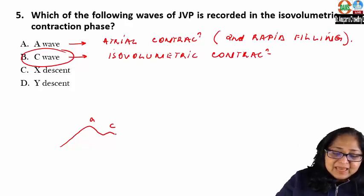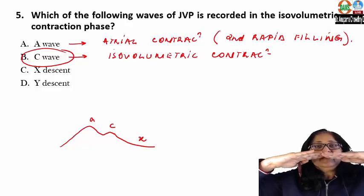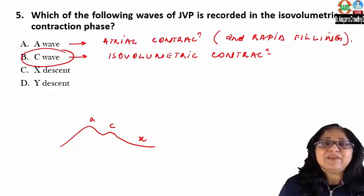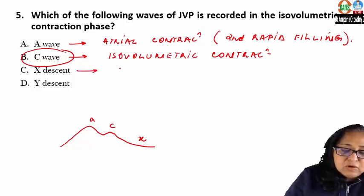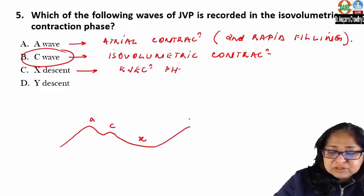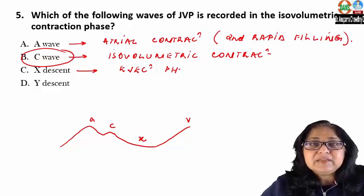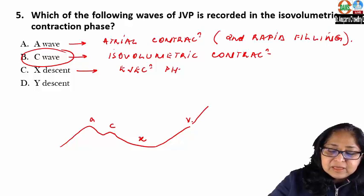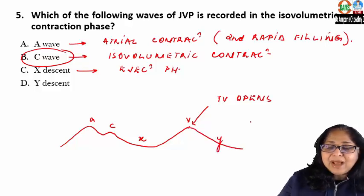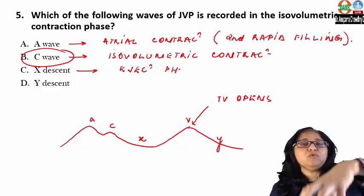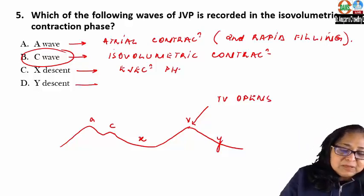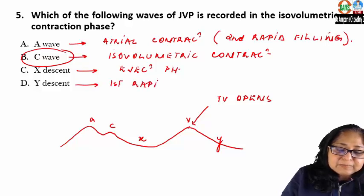C is followed by the X descent, which is due to a downward pull of the closed tricuspid valve into the right ventricle during the ejection phase. Then comes the V wave, due to venous filling of the right atrium just before opening of the tricuspid valve. When the tricuspid valve opens, you get the Y descent, due to rapid flow of blood from the right atrium into the right ventricle — occurring in the first rapid filling phase.